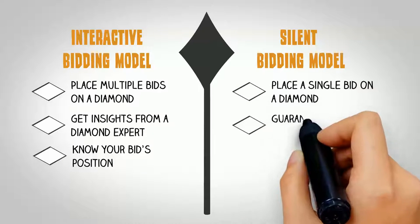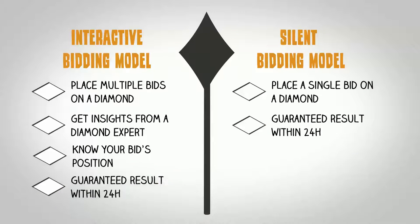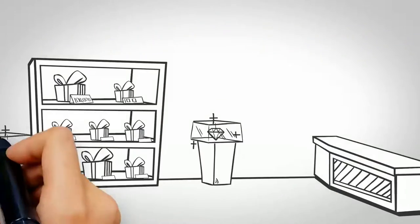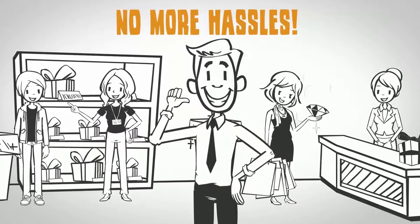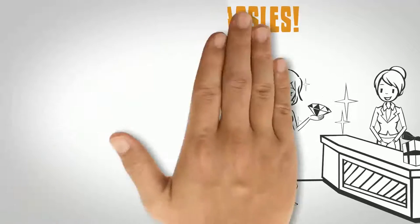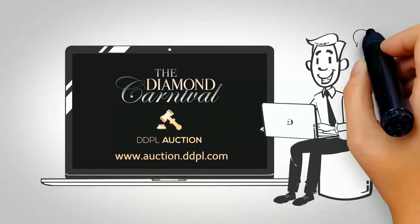Each bidding model guarantees results within 24 hours of the completion, either through emails or telephone calls. So instead of wasting time with unending bargains or going through the hassles of dealing with boring email and telephonic conversations, visit www.auction.ddpl.com to get started today.